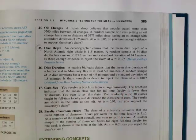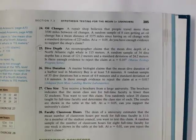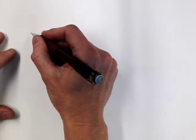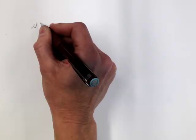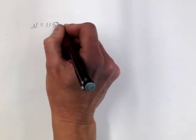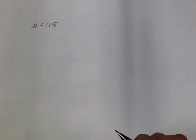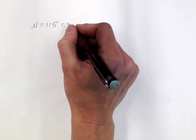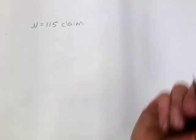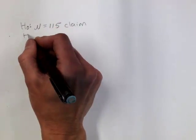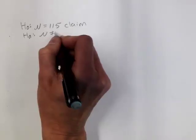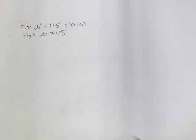So I'm going to write first the claim as a mathematical statement. That's going to be mu is equal to 115. So this is the claim. Will this be the null or the alternative? It's going to be the null. So this forces the alternative to be not equal to 115. So this is a two-tailed test.